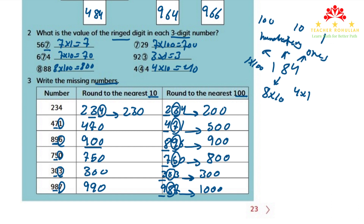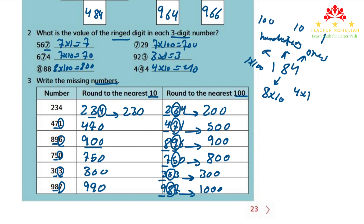This is all about the last part of Unit 1 of Cambridge Primary Mathematics Learner's Book 3. I hope it helps you learn how to round, how to find the missing parts in the 0 to 1000 number strip, and how to find the value of a digit in a number. Please make sure to subscribe to my channel, like the videos, and if you have any questions you can ask me in the comment section. Have a nice time, and thank you so much.